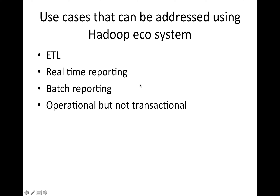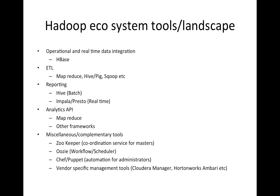These are the use cases that can be addressed using the Hadoop ecosystem: one is ETL or batch processing, second is real-time reporting, third is batch reporting, and fourth is operational — but not transactional. You cannot use the Hadoop ecosystem or any tool in the big data ecosystem for complex transactional-based applications. If your application is not transactional but operational in nature — requiring both real-time reads and writes — then you can consider tools from the big data or Hadoop ecosystem. But if it is transactional, you have to go with your traditional architecture.